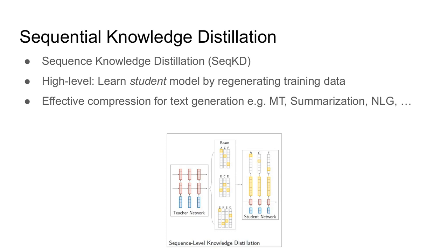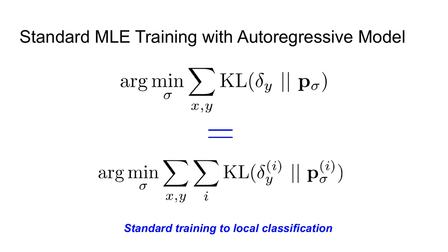But wait — something should bother you about this approach. We've been talking about standard multi-class classification, but as I noted at the beginning of this talk, Whisper is a model that produces full-on sentences based on some conditioning. This means we have to slightly change our approach and use a method known as sequential knowledge distillation. This is a standard method used for machine translation, summarization, and other conditional generation tasks. The high-level idea is to generate an entire sequence from our teacher model and use that sequence as a way of distilling the student model.